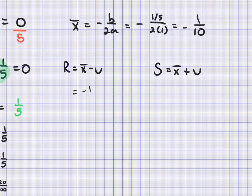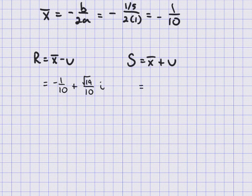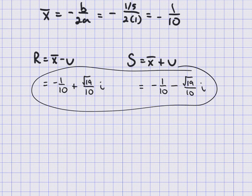So here is negative one-tenth plus radical 19 over 10 times i. And s is going to be negative one-tenth minus radical 19 over 10 times i. And here are my two solutions.